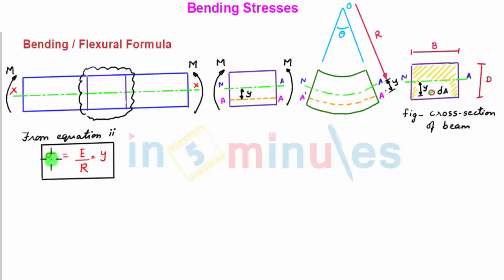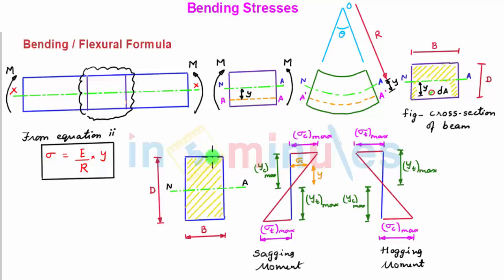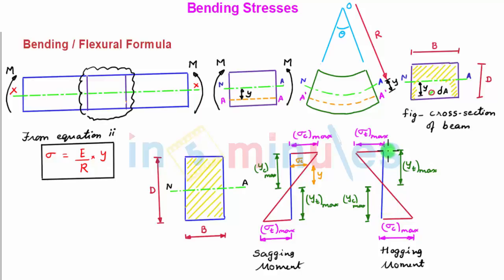From equation 2, the longitudinal or bending stress is directly proportional to the vertical distance Y from the neutral axis. For a rectangular cross-section beam with a symmetrical cross-section under a sagging bending moment, the upper layer is subjected to compression and the lower layer to tension. Compressive stress increases linearly from the neutral axis and is maximum at the extreme distance Yc_max. Since the section is symmetrical, the maximum tensile stress occurs at distance Yt_max on the other side. For a hogging moment, the upper layer is in tension and the lower in compression, with respective extreme stresses as shown in the figure.